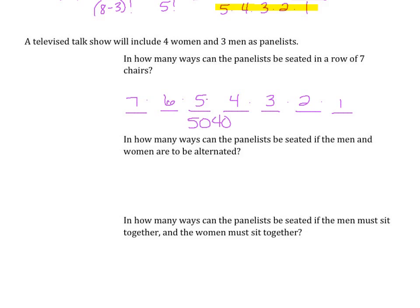What if we want to seat the panelists so that men and women are alternated? We'll start with women, then a man, a woman, a man, a woman, a man, and end with a woman. If we seat a woman first, we have four options for women going down the list, and three options for men going down the list. When we multiply these all together, we have 144 ways that we could arrange them.